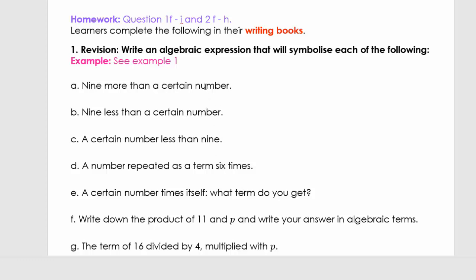So what I want you to do now is you need to write down examples. I'm just going to do the first one with you. We're going to say 9 more than a certain number. 9 more, so more means plus. So 9 plus a certain number. Certain number, we don't know what that certain number is, so it must be a variable. So 9 plus x, and we can also write it as x plus 9 because of the commutative property.